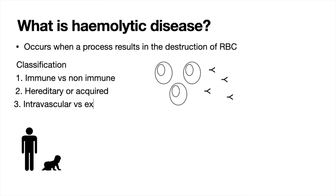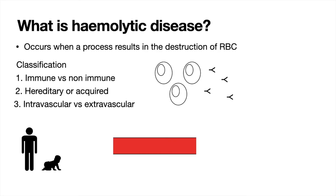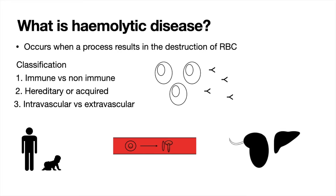The final classification is intravascular versus extravascular, which refers to the location of red blood cell destruction. Are the cells being destroyed within the vasculature, or outside it — in organs such as the spleen, liver, and bone marrow — where macrophages phagocytose those red blood cells?